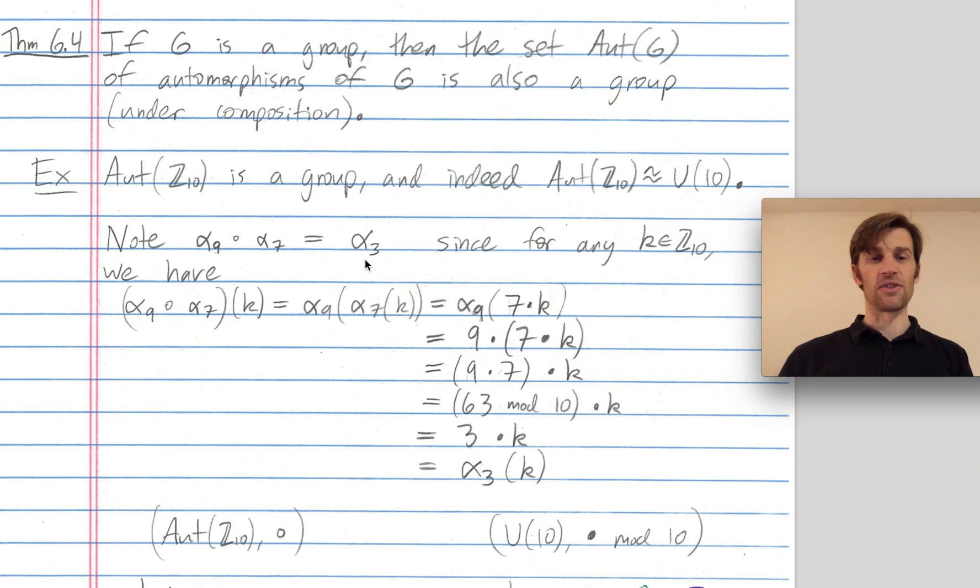How do I see that these automorphisms on the left and on the right are equal? To see that functions are equal, you just plug in an arbitrary input k and show that you get the same answer on both sides. Let's verify this equality. If I apply alpha 9 composed with alpha 7 to k, by definition, that's alpha 9 of alpha 7 of k.